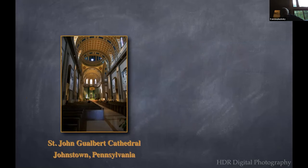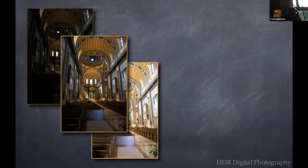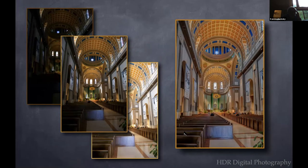Here's an example. It's been a long time since I visited the grand cathedrals of Europe, but I did make it out to Johnstown Cathedral. Here's a photograph — you can see deep shadows and overblown highlights. I take the extra exposures, combine them, and this is what I end up with. You can see the shadows have opened up and now I can see details in the stained glass window.